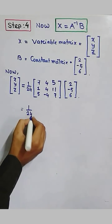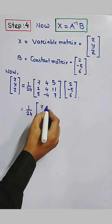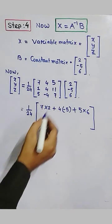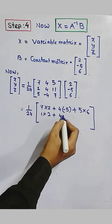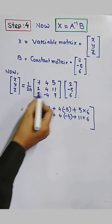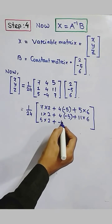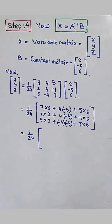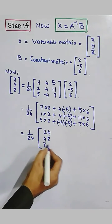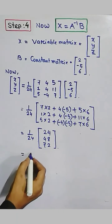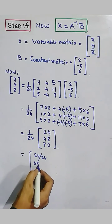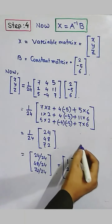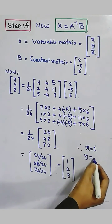Now performing matrix multiplication with 1 by 24. First row: 7 times 2 plus 4 times minus 5 plus 5 times 6. Second row: 1 times 2 plus 4 times minus 5 plus 11 times 6. Last row: 5 times 2 plus minus 4 times minus 5 plus 7 times 6. The values come out to 24, 48, and 72. Multiplying by 1 by 24: 24 by 24, 48 by 24, 72 by 24 gives 1, 2, and 3. So x equals 1, y equals 2, and z equals 3.